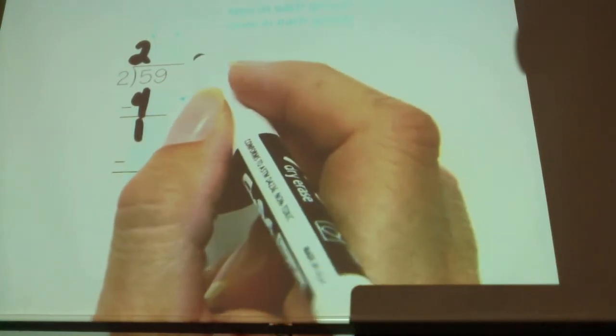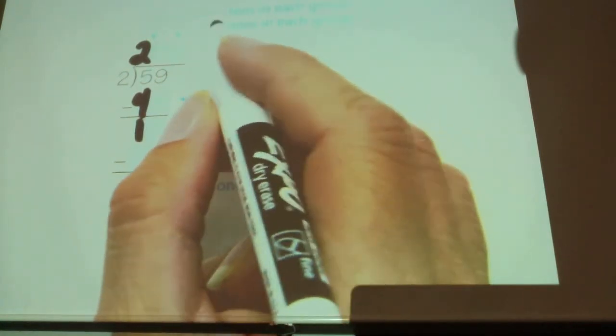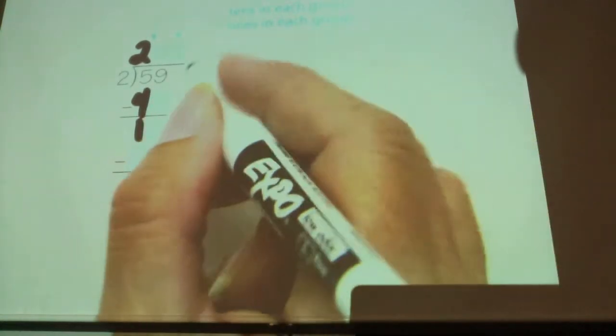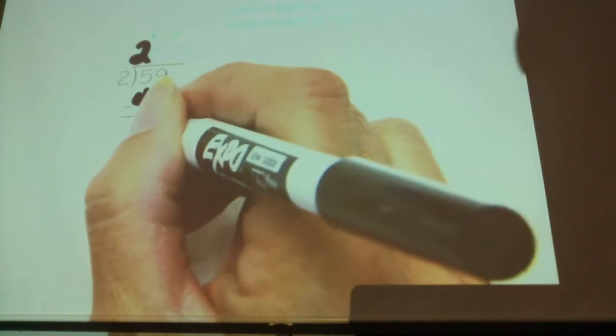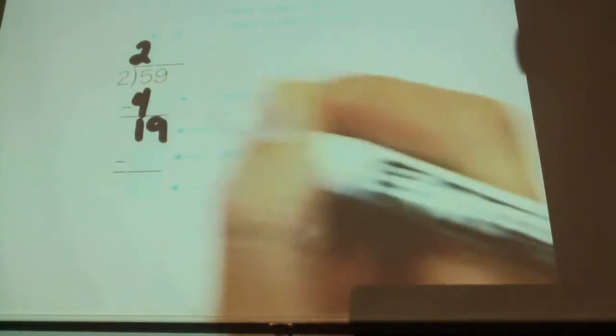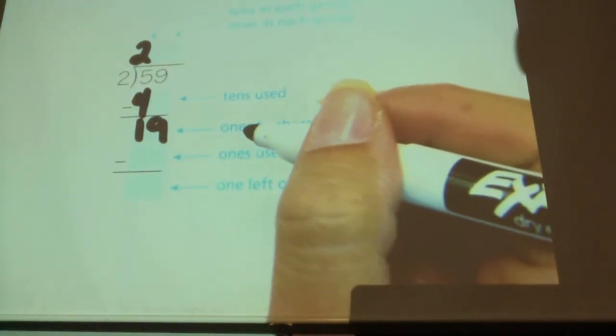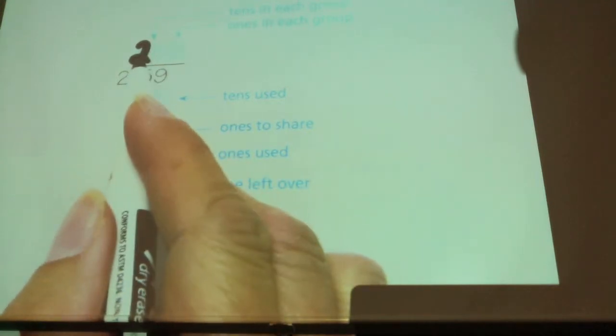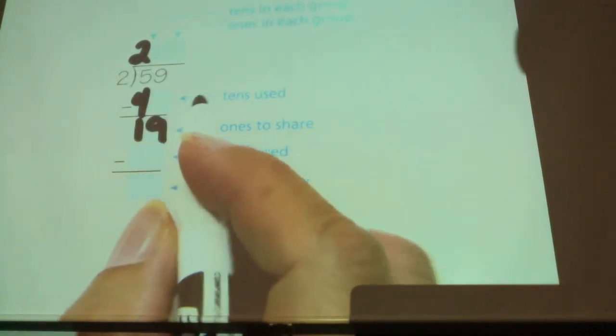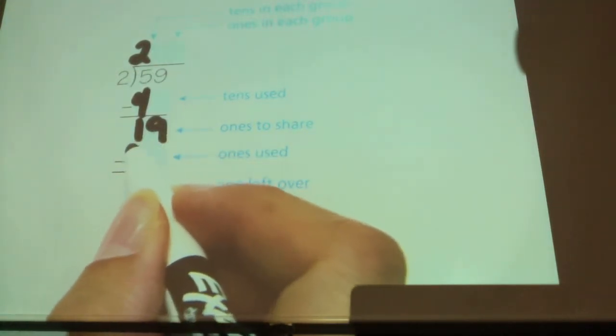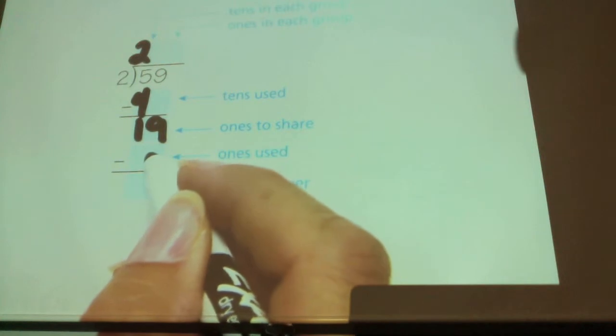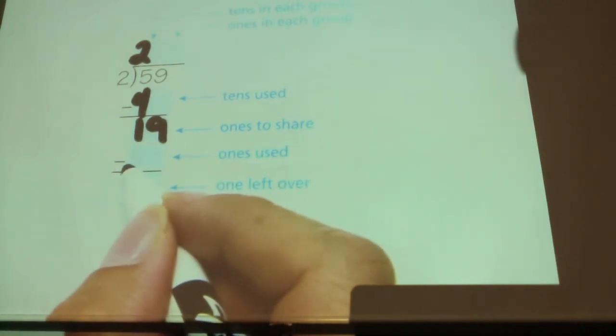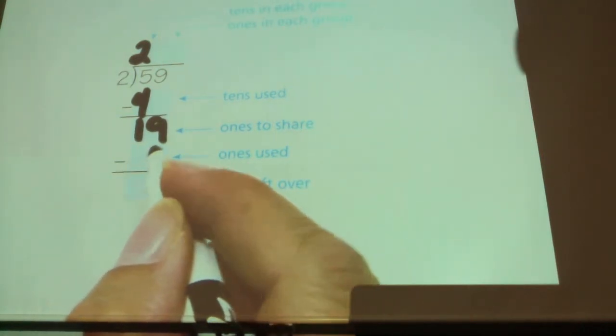So now, how many ones do I have? Nine ones. I'm going to bring those ones down here because now I'm done with the tens. Now I'm going to play with the ones. So I have a ten stick which I'm going to regroup. How many ones is it going to become? Ten. I had nine already. So now how many total ones do I have? Nineteen.